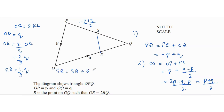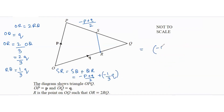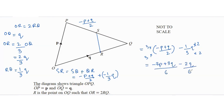SR = SQ + QR. SQ is half of PQ = (-p + q)/2, and QR = -(1/3)q. Finding a common denominator of 6: SR = 3(-p + q)/6 + (-2q)/6 = (-3p + 3q - 2q)/6 = (q - 3p)/6 = q/6 - p/2.